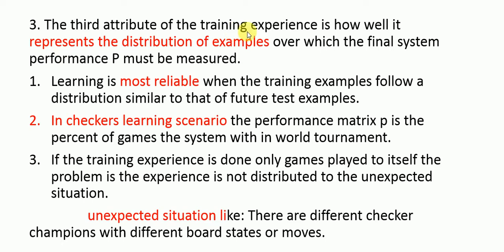The third attribute of training experience is how well it represents the distribution of examples over which the final system performance P must be measured. Learning is most reliable when training examples follow a distribution similar to that of future test examples. For example, in the checker learning scenario, the performance measure P is the percent of games the system wins in the world tournament.